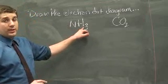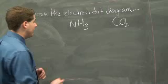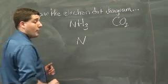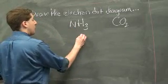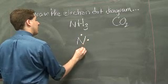If I consider NH3, nitrogen is in group 15, it's going to have five valence electrons. Start by drawing your central atom, or the atom that comes first, and we're going to place the five valence electrons around the nitrogen.